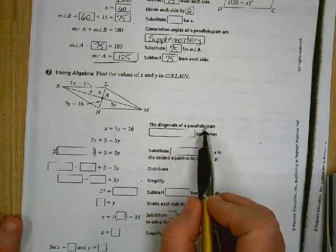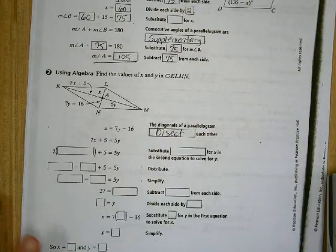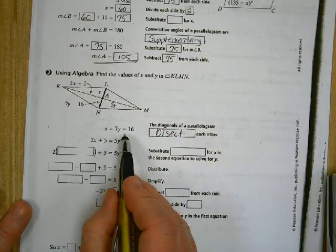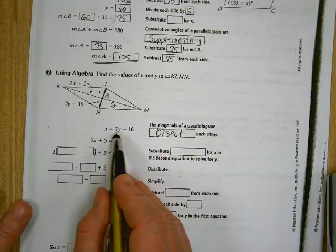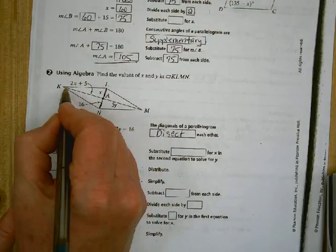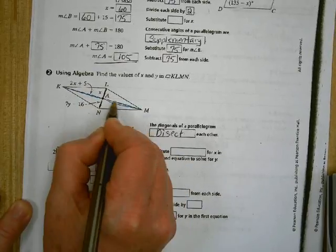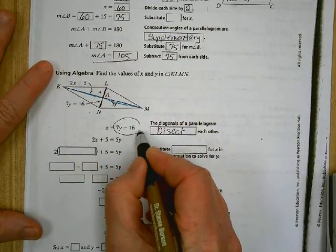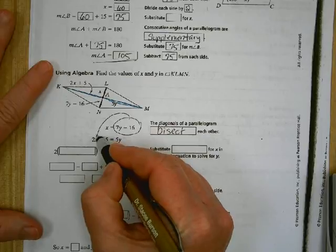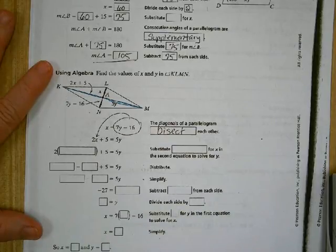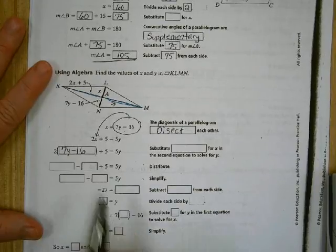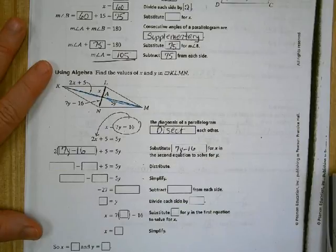The diagonals of a parallelogram bisect each other, which means that this piece right here, which is X, is the same as 7Y minus 16. Well, I can't solve that because it's got X and Y involved in it. And it also means that 2X plus 5, this section right here, is equal to 5Y. And I can't solve that either because it's got X and Y in it. Well, if X is equal to 7Y minus 16, then I can use it in place of X in that problem. So we're using geometry, and then we're also going back and using some algebra, where we're going to have to solve systems. So we're going to put this in place of X. And then this equation has only Y in it. So I put 7Y minus 16 in place of X. Then what would you do next?